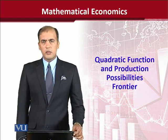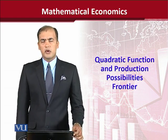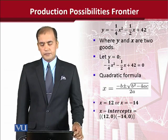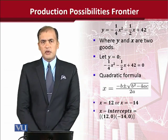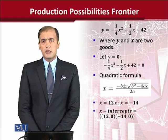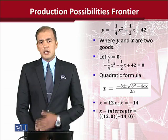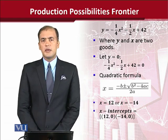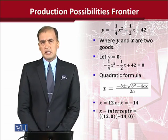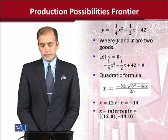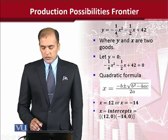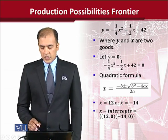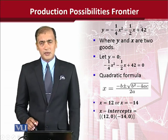This is basically about the production possibilities frontier, and straight away we have a mathematical equation that shows it: y = -1/4 x² - 1/2 x + 42.